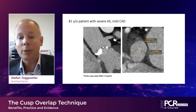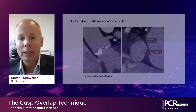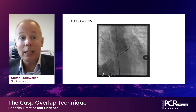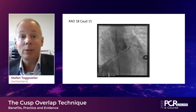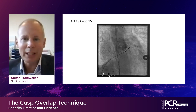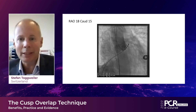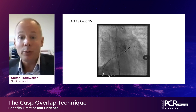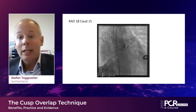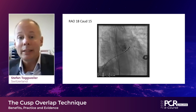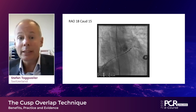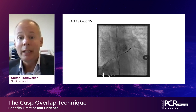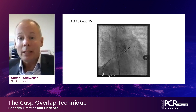So to reach the cusp overlap view, we have to go more REO-caudal. This is how it looks when we go REO-18, caudal-15. As you can see, the pacemaker wire is a little bit dislodged on this image, but it doesn't matter. What you can see here is that we don't have a perfect overlap, but it's very close. And already we are isolating the non-coronary cusp on the left side of the screen, and we are opening up the LVOT.